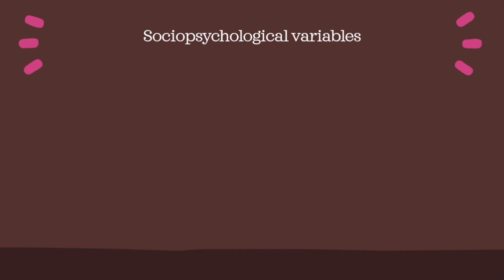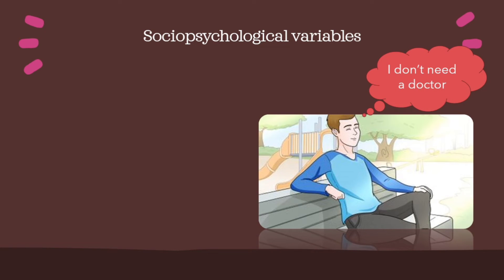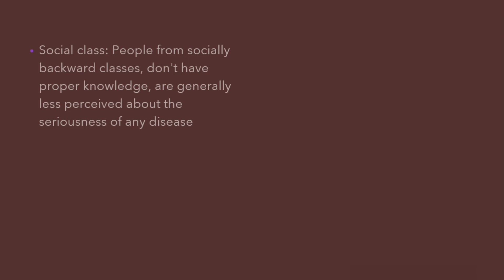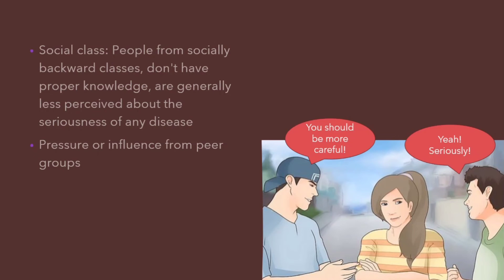Coming to the socio-psychological variables, personality is a very important factor. Not only in the case of COVID, but other diseases also. We have often seen that a person who is never afraid of any symptom doesn't care to visit a doctor, and we have also seen people who are very alarmed even for a trivial symptom. So perceptions depend on personality. It also depends on social class. Those who are from socially backward classes and don't have proper knowledge are generally less aware about the seriousness of any disease. Our perceptions also depend on the pressure or influence from our peer groups — for example, family and friends trying to convince us about taking the disease seriously. All of this leads us to perceive the threats of a disease, which makes us take certain steps to prevent it.